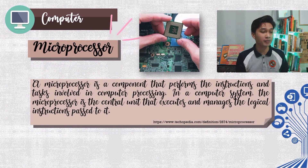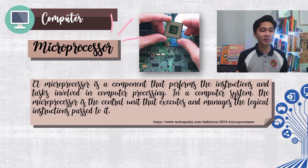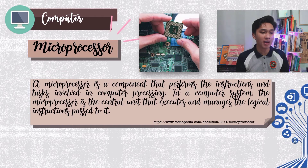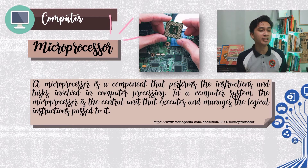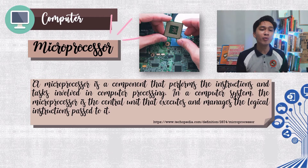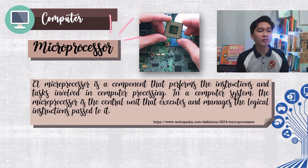Next, the microprocessor. A microprocessor is a component that performs the instructions and tasks involved in computer processing. It is the central unit that executes and manages the logical instructions passed to it, processes instructions, and communicates with outside devices, controlling most of the operation of the computer.